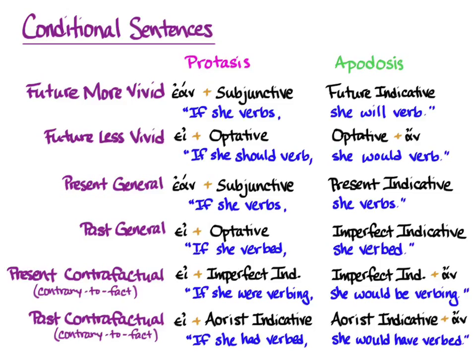The negative for the assertion part, the apodosis, is οὐ. And for the unreal supposition — the if-clause — the negative is μή.